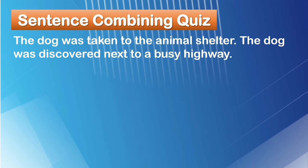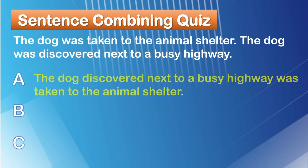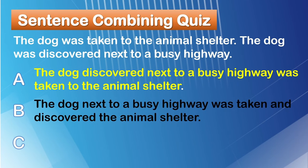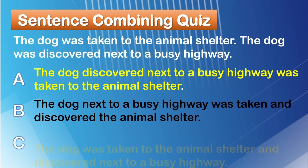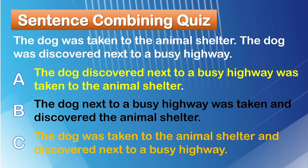The dog was taken to the animal shelter. The dog was discovered next to a busy highway. Here are your choices. A: The dog discovered next to a busy highway was taken to the animal shelter. B: The dog next to a busy highway was taken and discovered the animal shelter. Or C: The dog was taken to the animal shelter and discovered next to a busy highway.